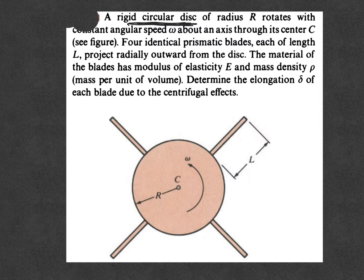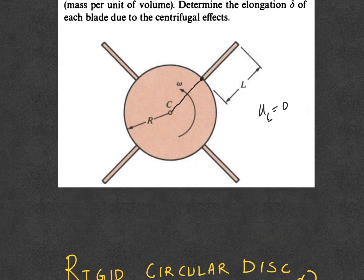Rigid circular disc means there won't be any relative displacement. If this is rotating about point C, this point won't have any displacement—u of C will be zero. The disc won't have any kind of displacement. The deformations will be only for the blades, not for the disc. Now let's start solving the problem.